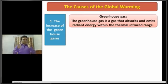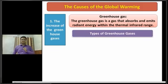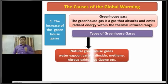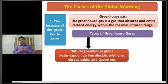Dear students, now the types of greenhouse gases. Basically, there are two types. One is natural greenhouse gases: water vapour, carbon dioxide, methane, nitrous oxide, and ozone, etc.